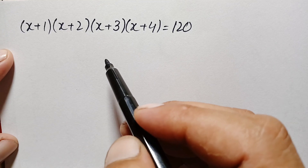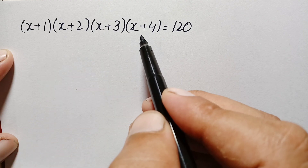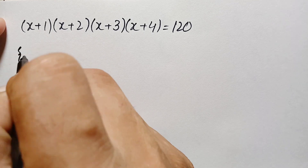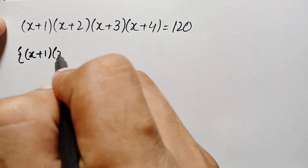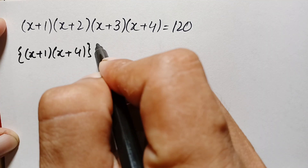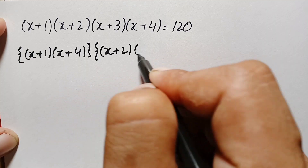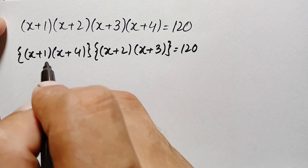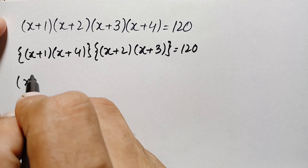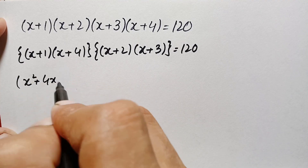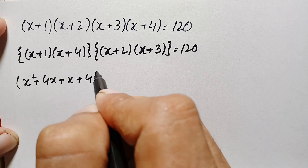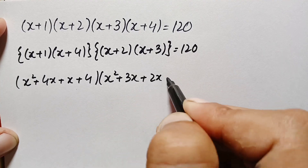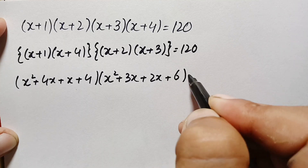How can we solve this math problem? First of all, we will combine the first and fourth expressions, and the second and third expressions. So the left hand side will become (x+1)(x+4) times (x+2)(x+3) = 120. Multiplying: (x+1)(x+4) = x²+5x+4, and (x+2)(x+3) = x²+5x+6, equal to 120.